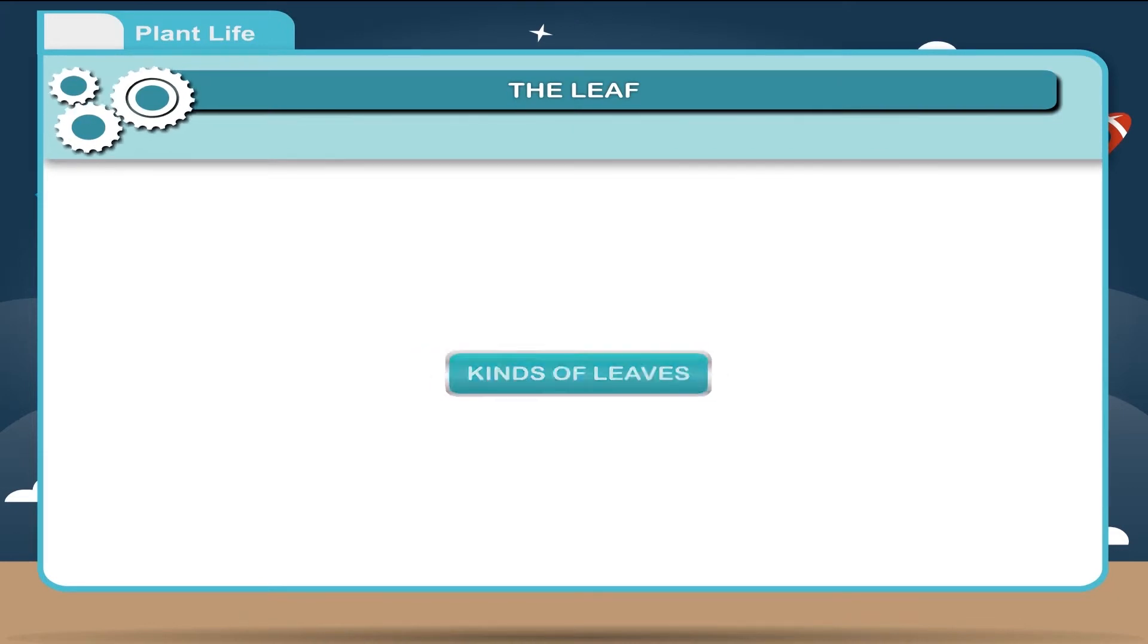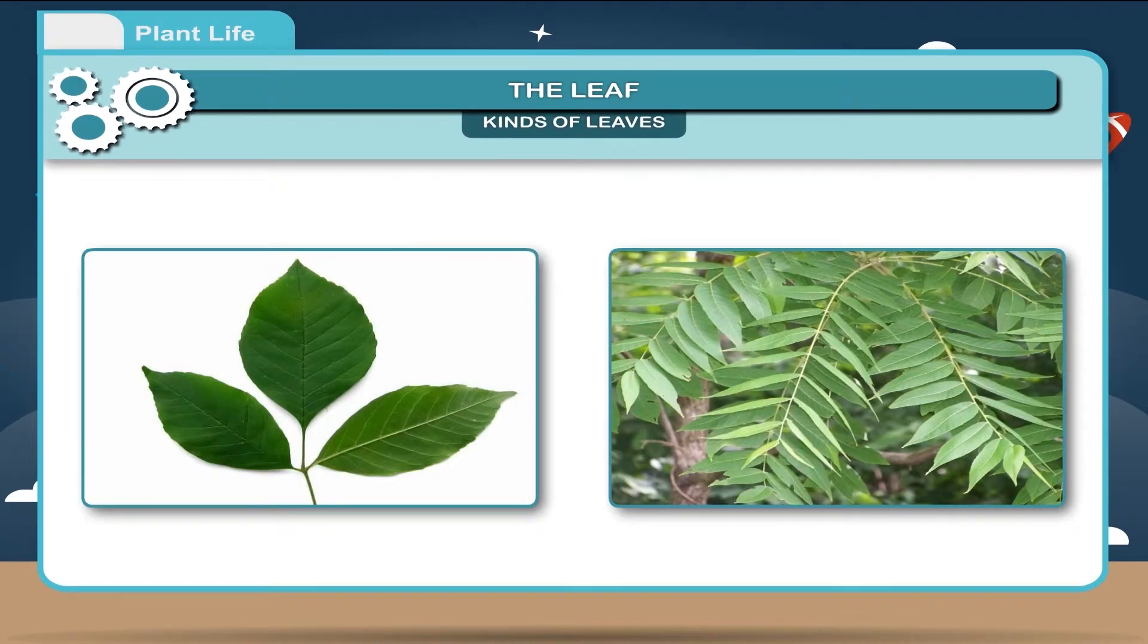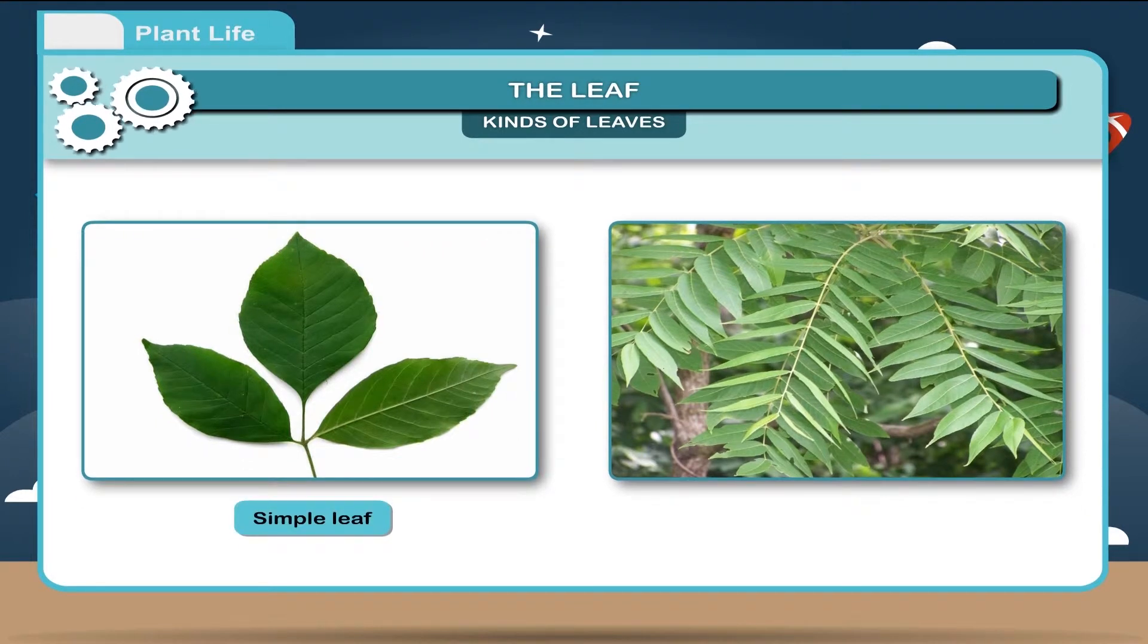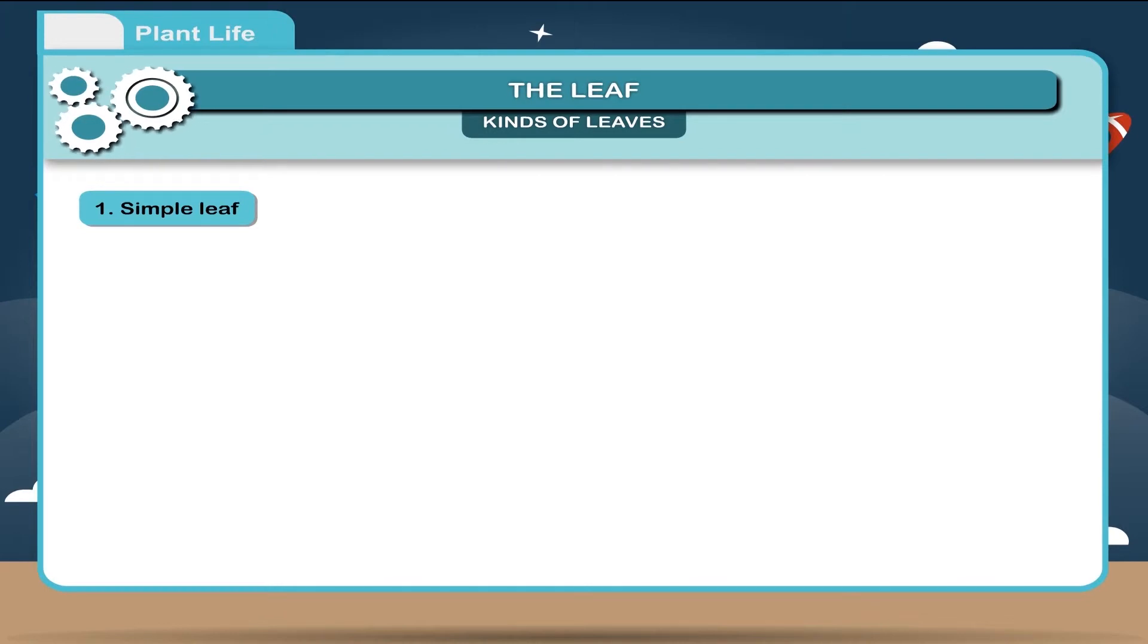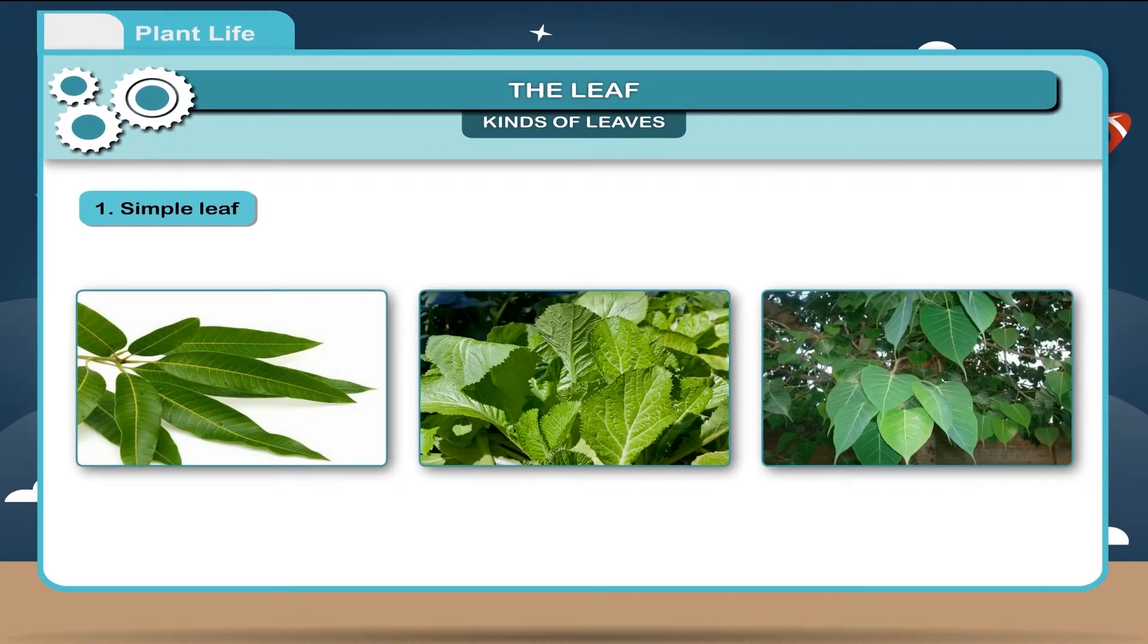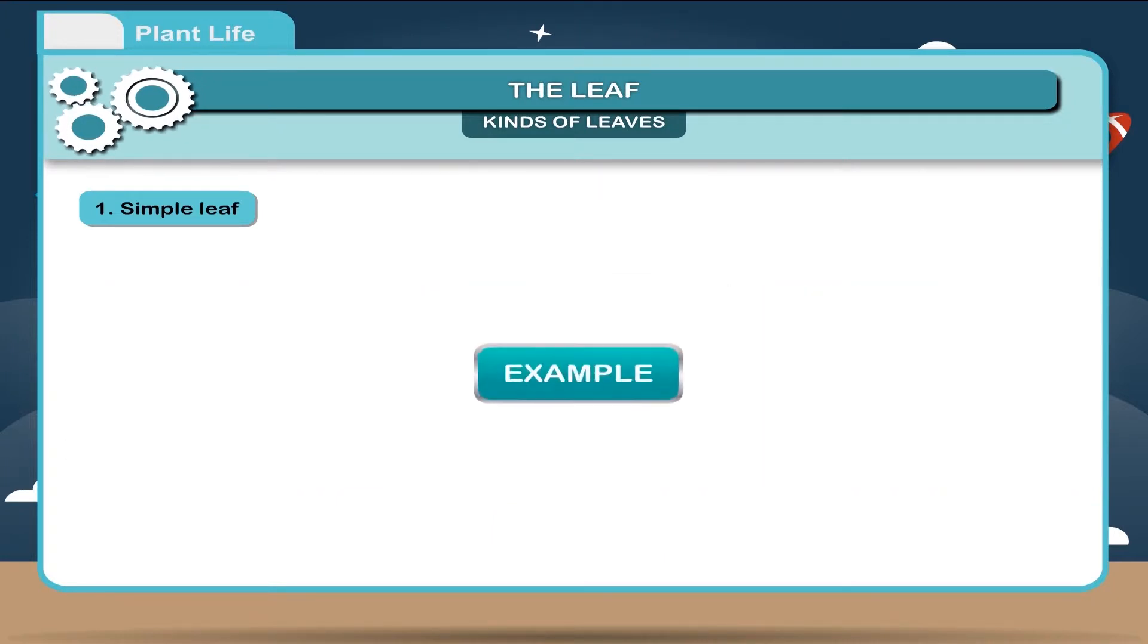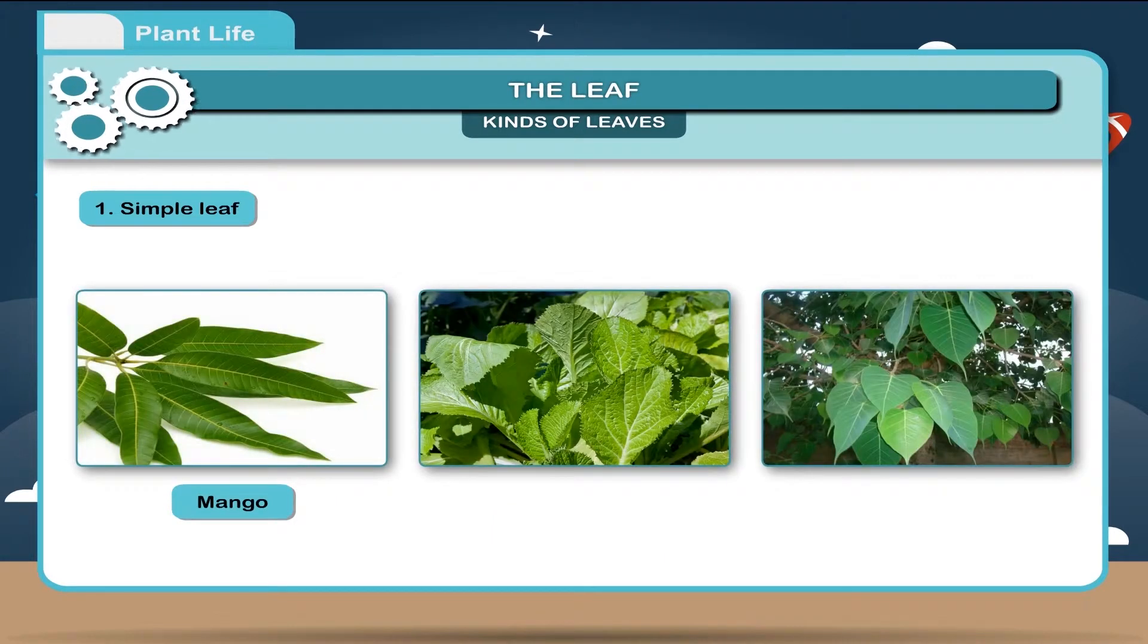Kinds of leaves. On the basis of lamina, leaves are of two kinds. Simple leaf and compound leaf. Simple leaf. It consists of single and undivided lamina without any cuts. In some cases, leaf blade is slightly incised. Example, leaves of mango, mustard, banyan etc.